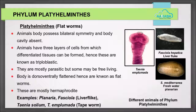Reproduction in Coelenterata is usually asexual but can also be sexual, as in the medusa form. Examples include jellyfish, hydra, and sea anemones. Phylum Platyhelminthes, that is flatworms: the animal's body possesses bilateral symmetry and body cavity is absent. Animals have three layers of cells from which differentiated tissues can be formed, hence these are known as triploblastic. They are mostly parasitic but some may be free-living. The body is dorso-ventrally flattened, hence they are known as flatworms. These are mostly hermaphrodite. Examples: Planaria, Fasciola (liver fluke), Taenia solium, and Taenia saginata (tapeworm).